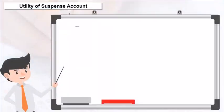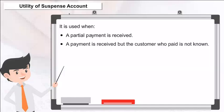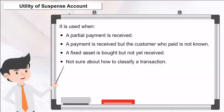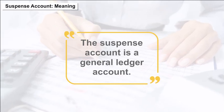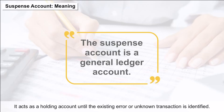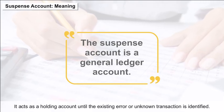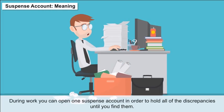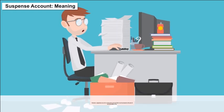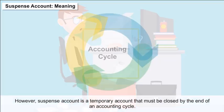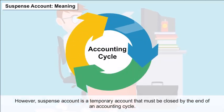Utility of Suspense Account: It is used when a partial payment is received, a payment is received but the paying customer is not known, a fixed asset is bought but not yet received, or when it is not sure how to classify a transaction. The suspense account is a general ledger account that acts as a holding account until the existing error or unknown transaction is identified. It is a temporary account that must be closed by the end of an accounting cycle.